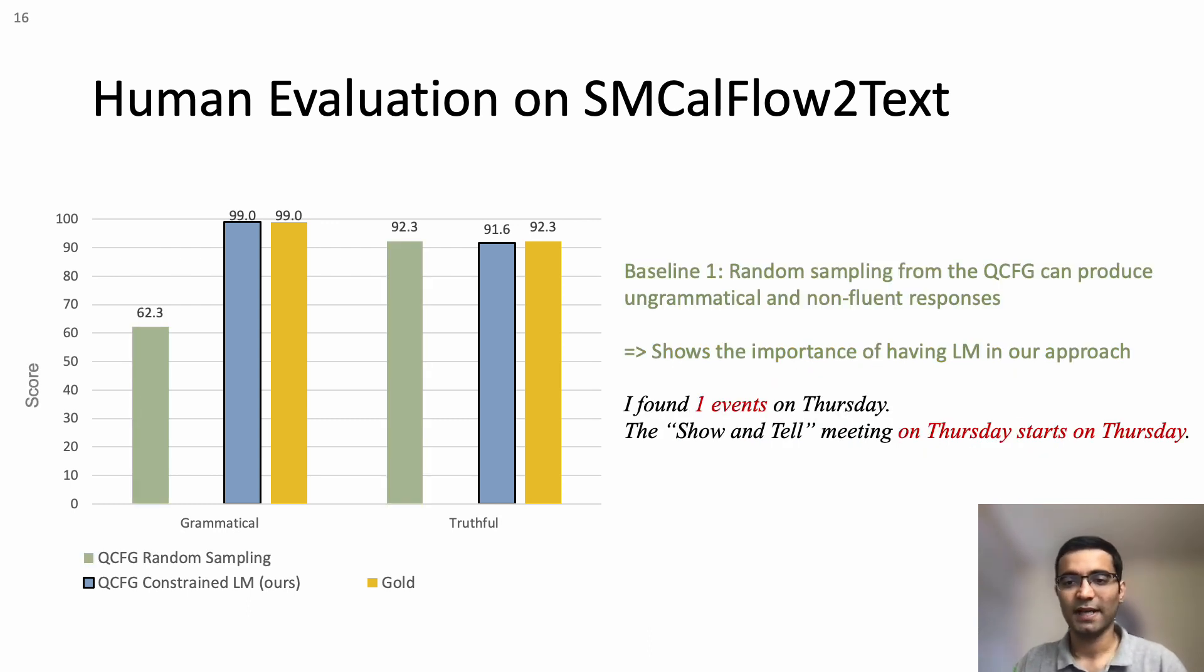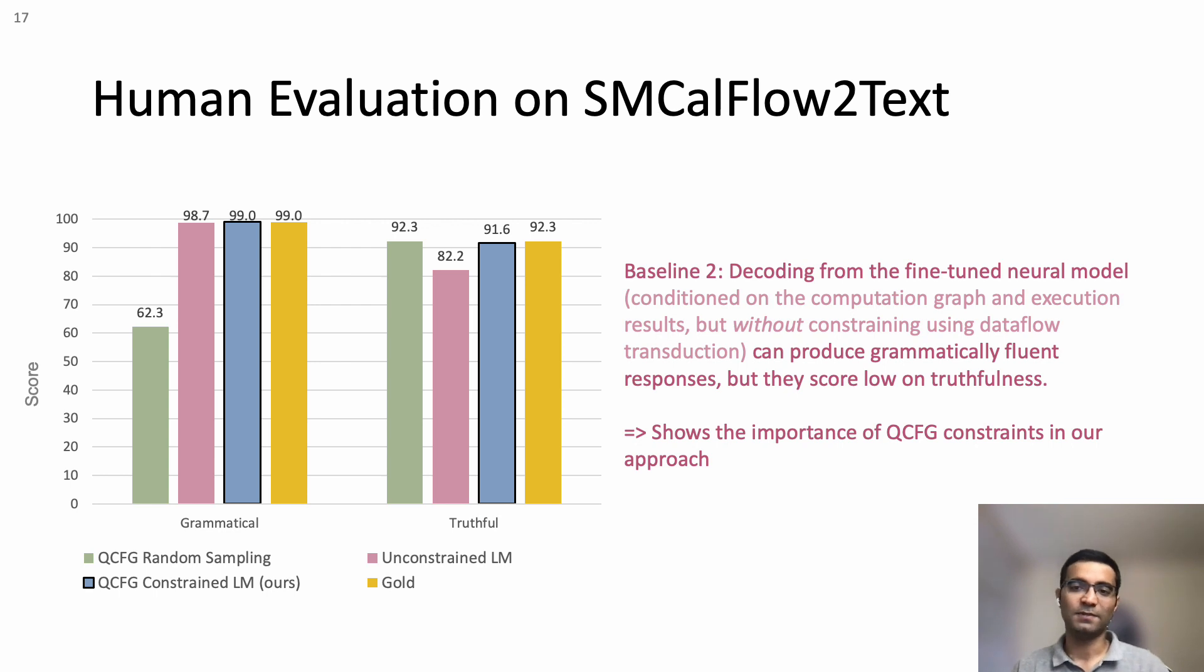Our results show that random sampling from QCFG often produces ungrammatical responses. Additionally, we observe that decoding from a fine-tuned seq-to-seq model generated fluent outputs, but they tend to be less truthful on average compared to the proposed method of QCFG constraint decoding.